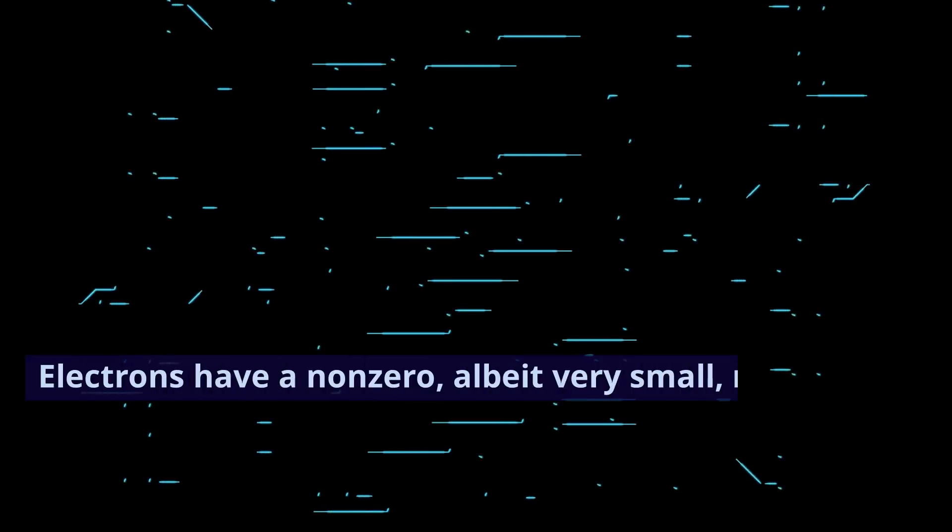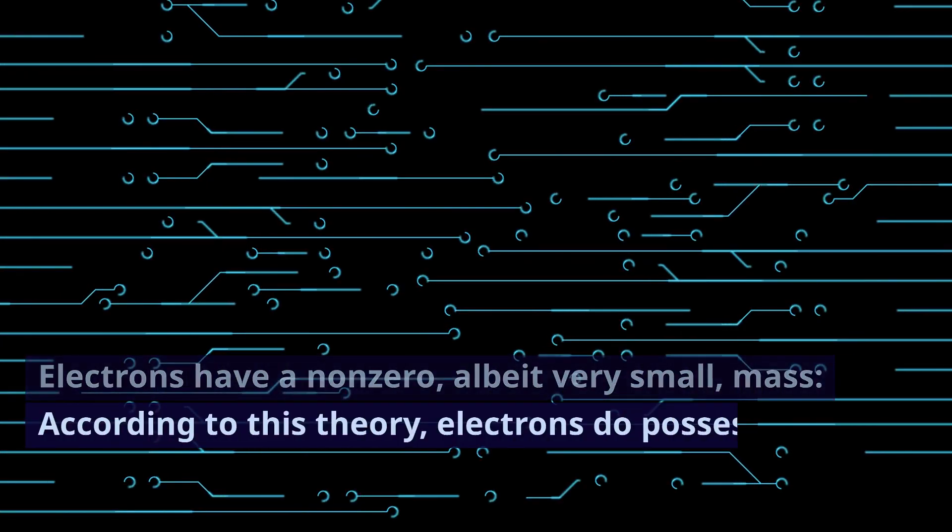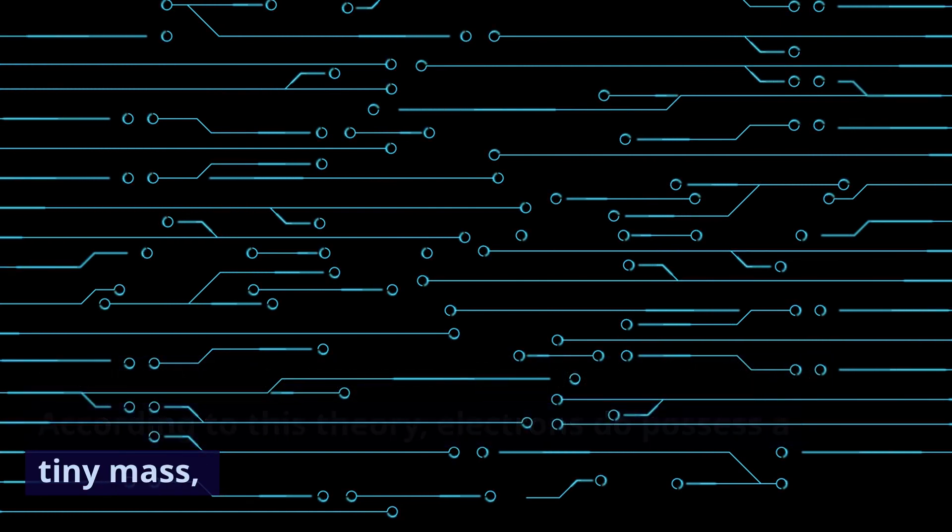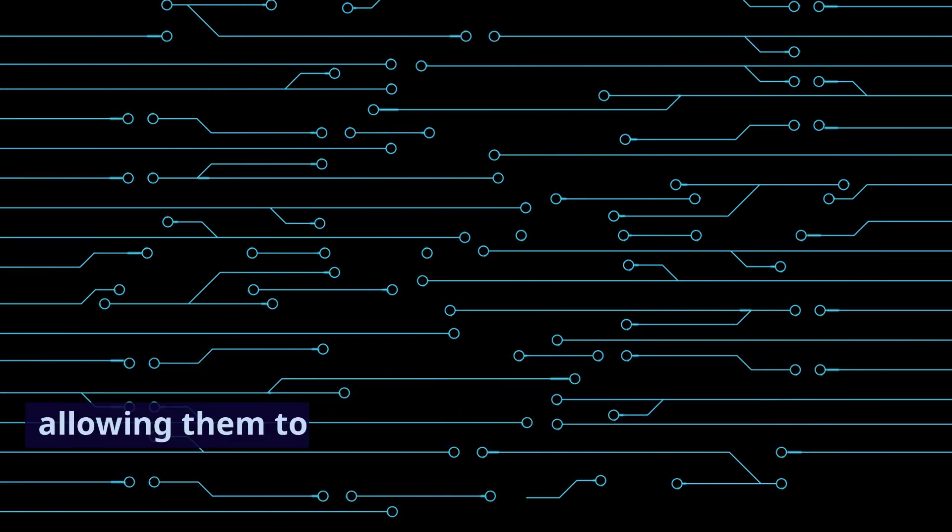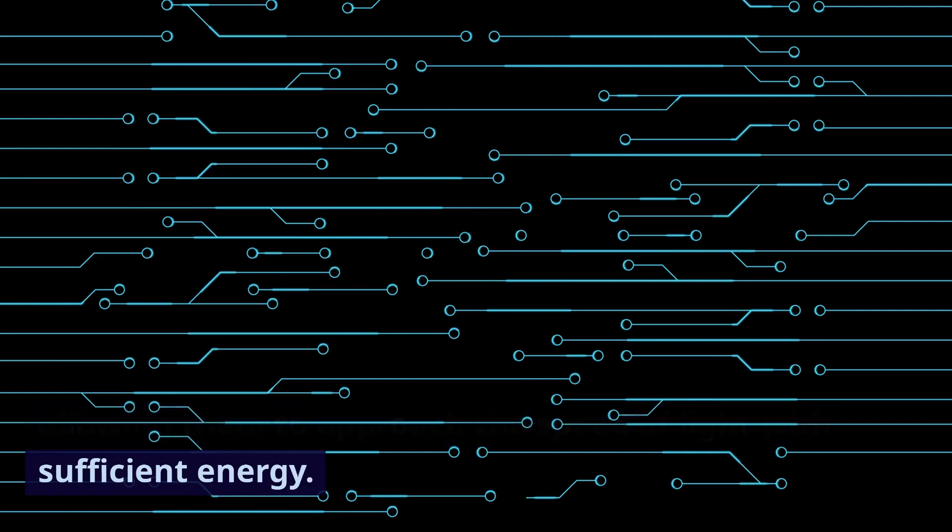Electrons have a non-zero, albeit very small, mass. According to this theory, electrons do possess a tiny mass, allowing them to approach the speed of light with sufficient energy.